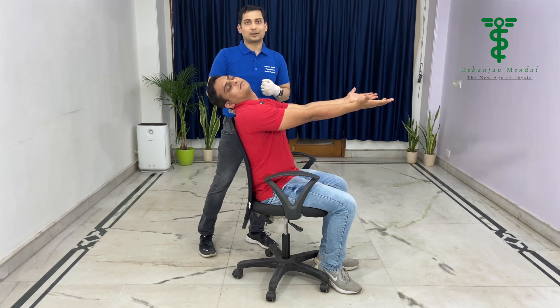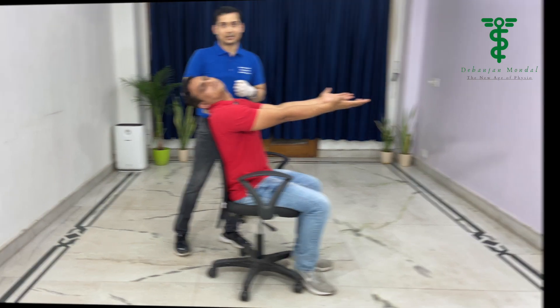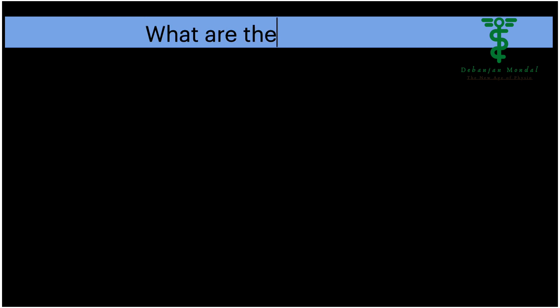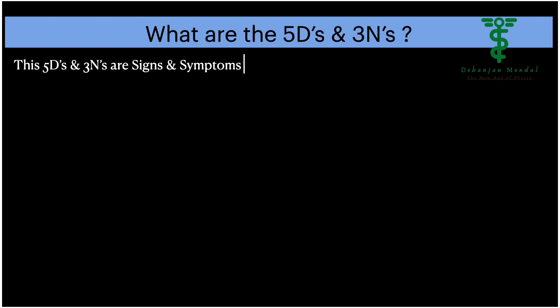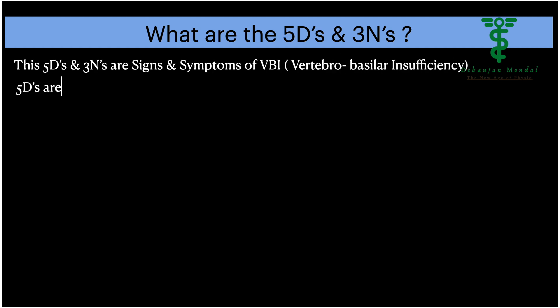So this is all about the Out-On test. Now, what are the five D's and three N's? These five D's and three N's are signs and symptoms of VBI — vertebrobasilar insufficiency.